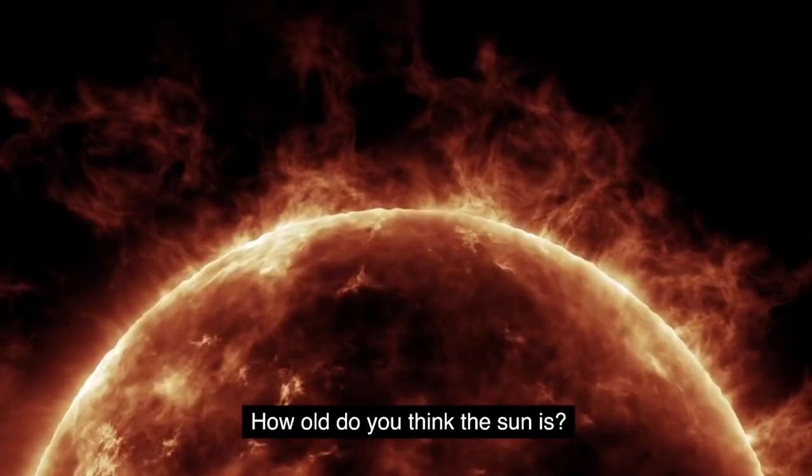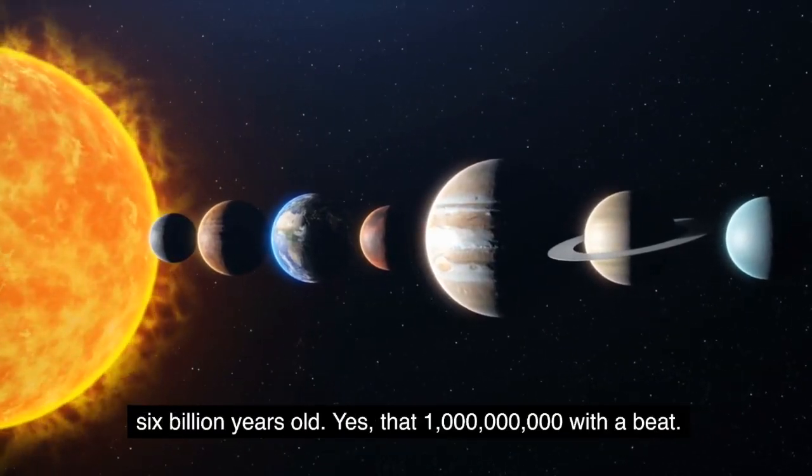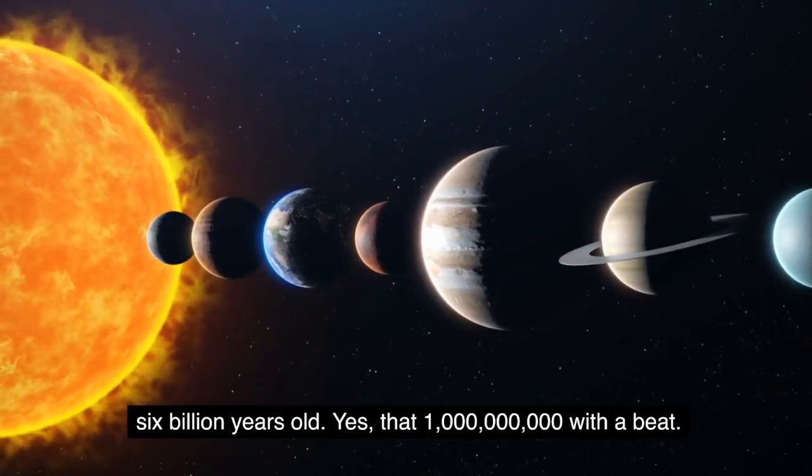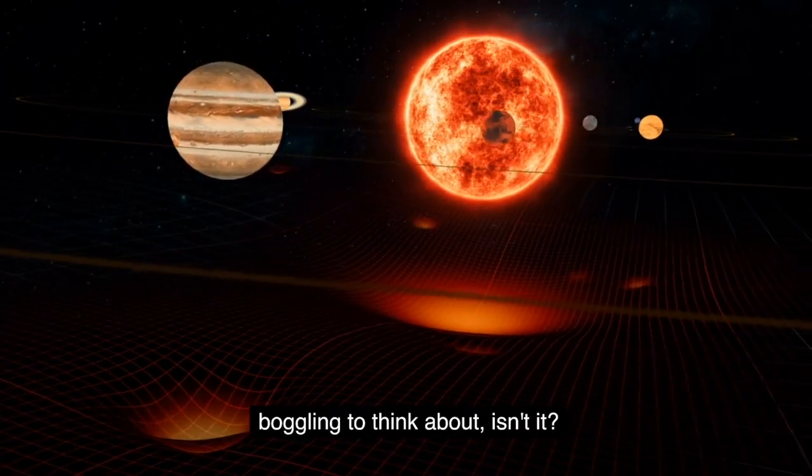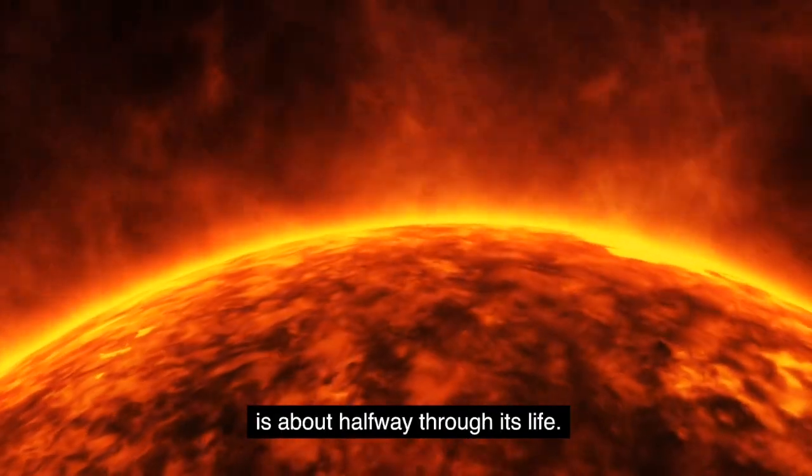How old do you think the sun is? Well, our brilliant celestial orb is approximately 4.6 billion years old. Yes, that's billion with a B. Isn't that something? It's mind-boggling to think about, isn't it? This middle-aged star of ours is about halfway through its life. It's like the sun is in its midlife crisis.